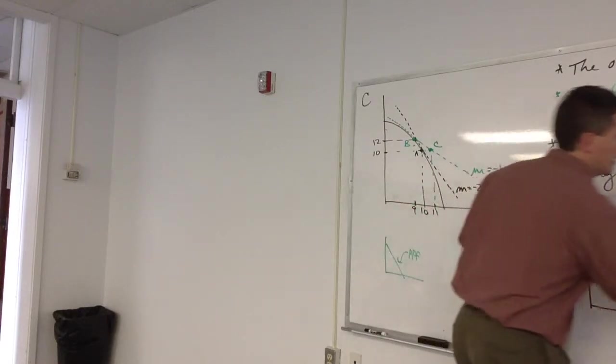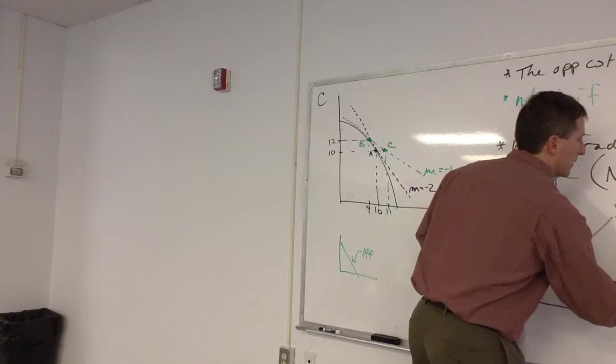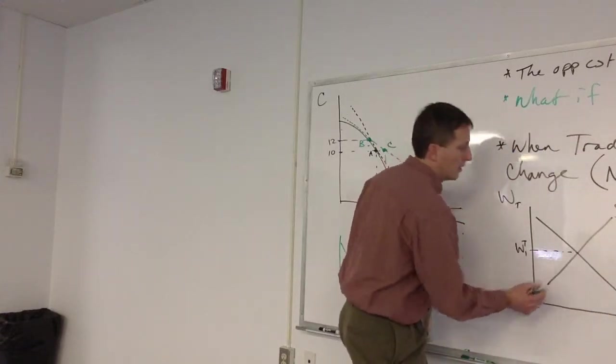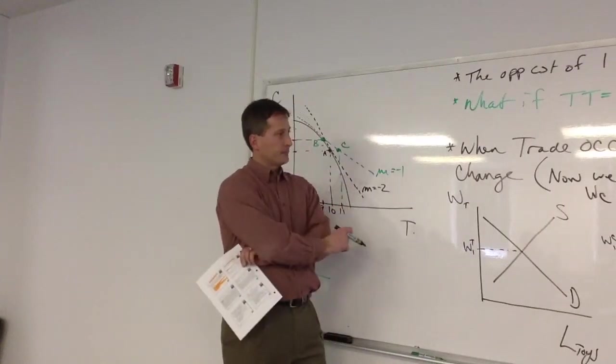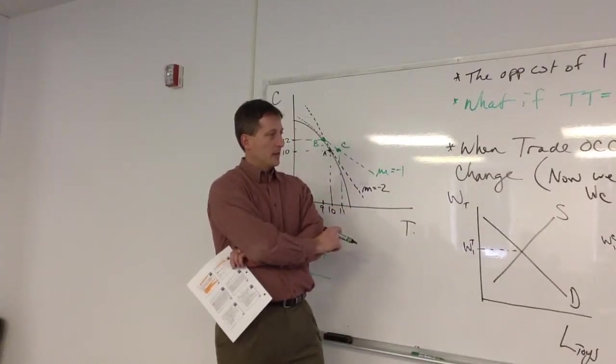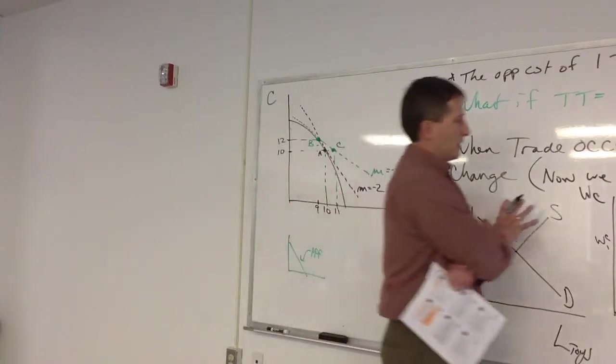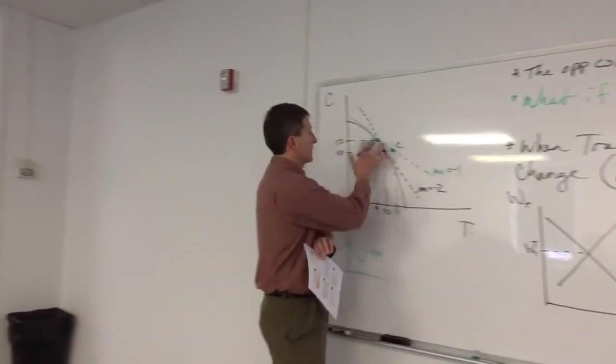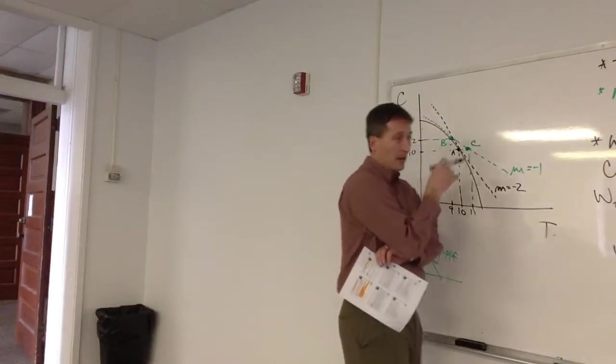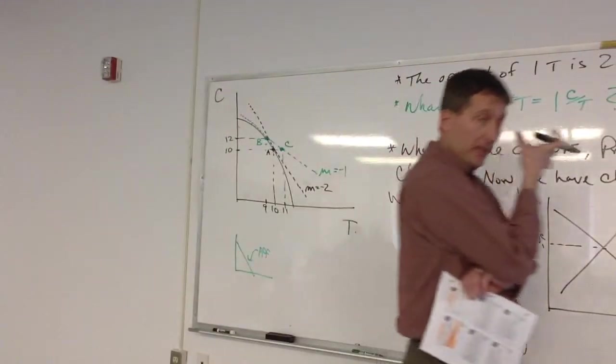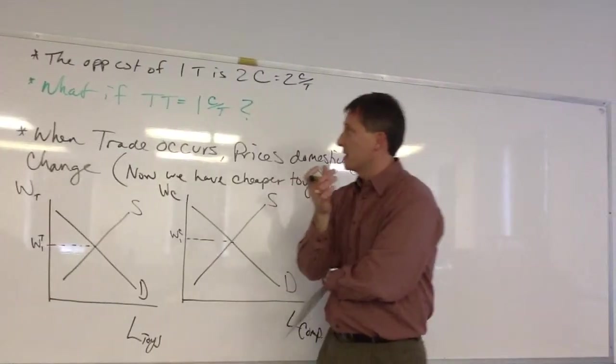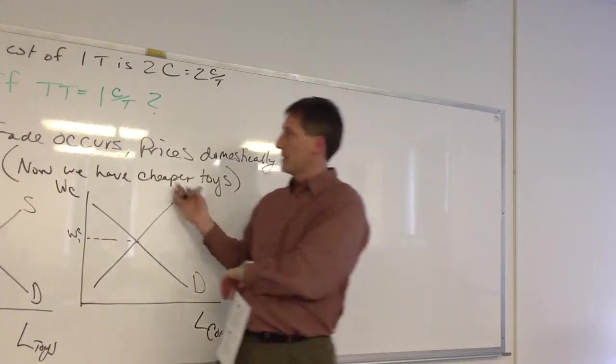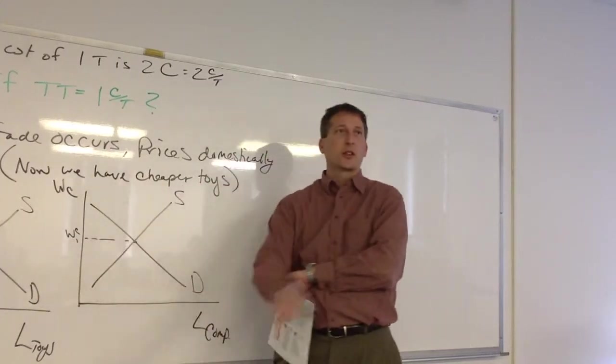And here's our home base starting place here. Let's call it W1 and W1 over here. I'll just leave off the quantity for now. So here's kind of pre-trade, right? At point A, let's say. What happens when we engage in trade and move to point C? What happens in these labor markets? What's your prediction on the wages?